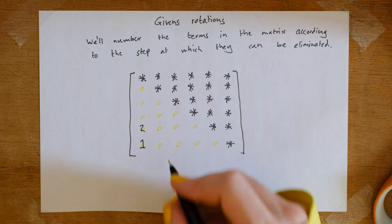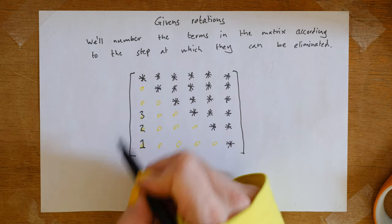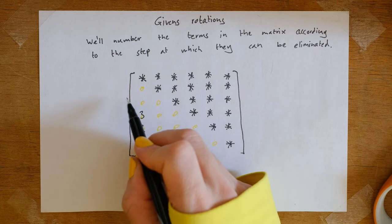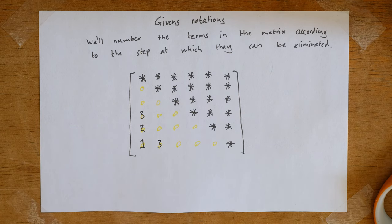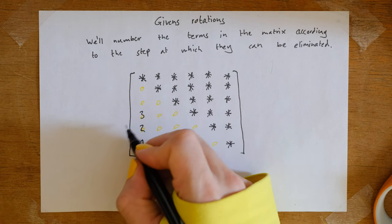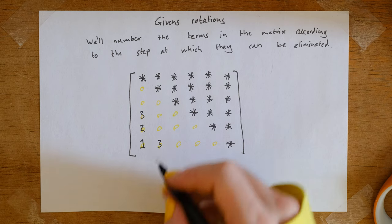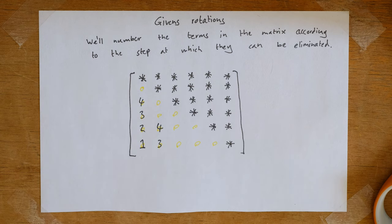And we could then eliminate the term above it in step 3 by considering the 3rd and 4th rows. But that operation will only involve the 3rd and 4th rows. And we could therefore simultaneously eliminate this term by considering the 5th and 6th rows, and we could proceed in the following fashion.